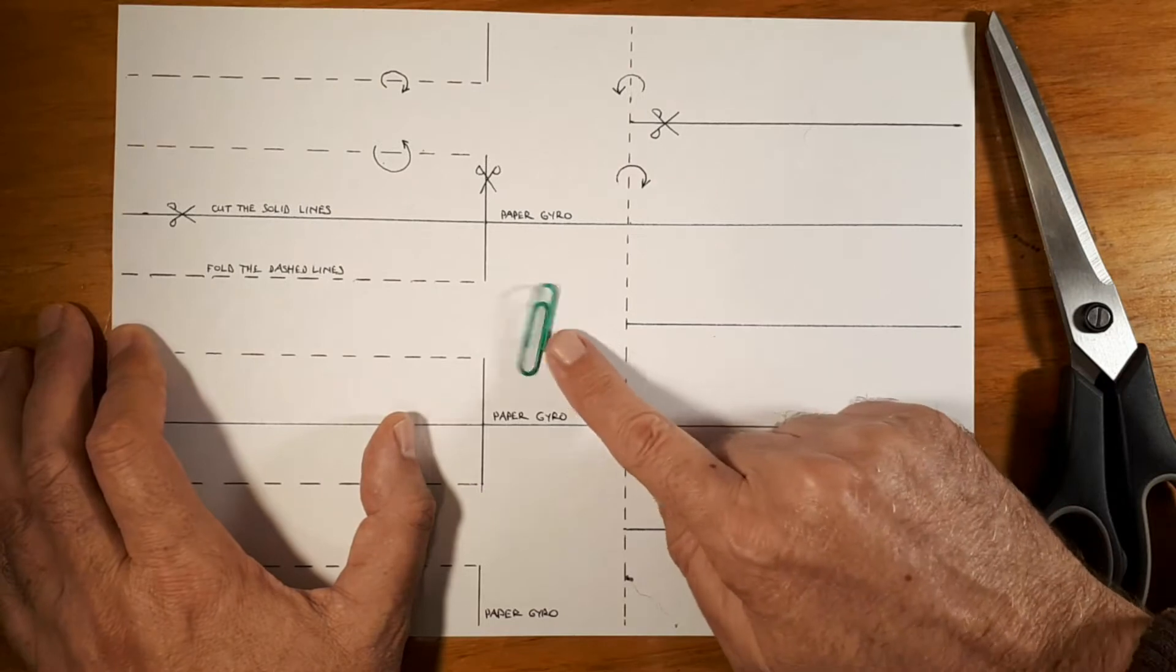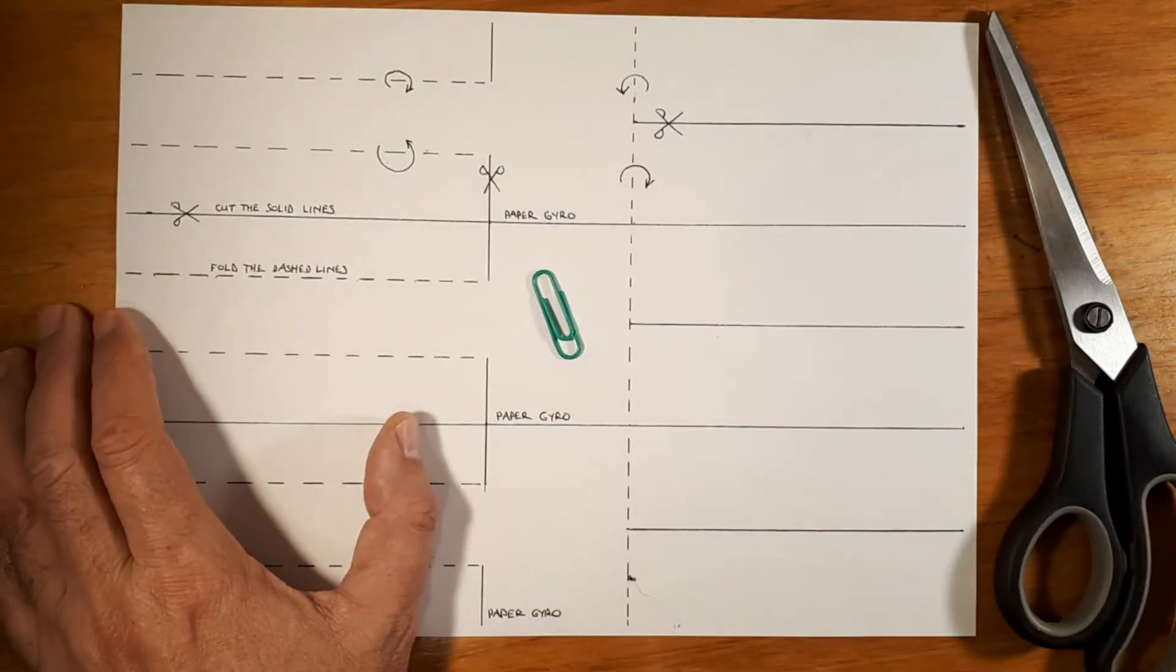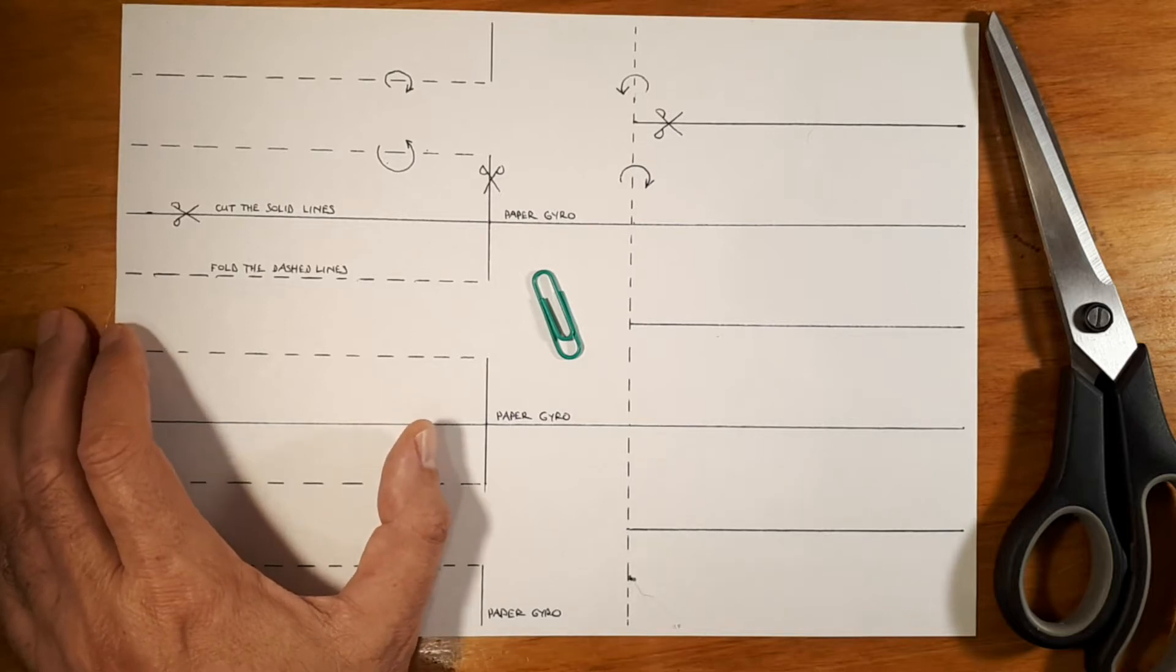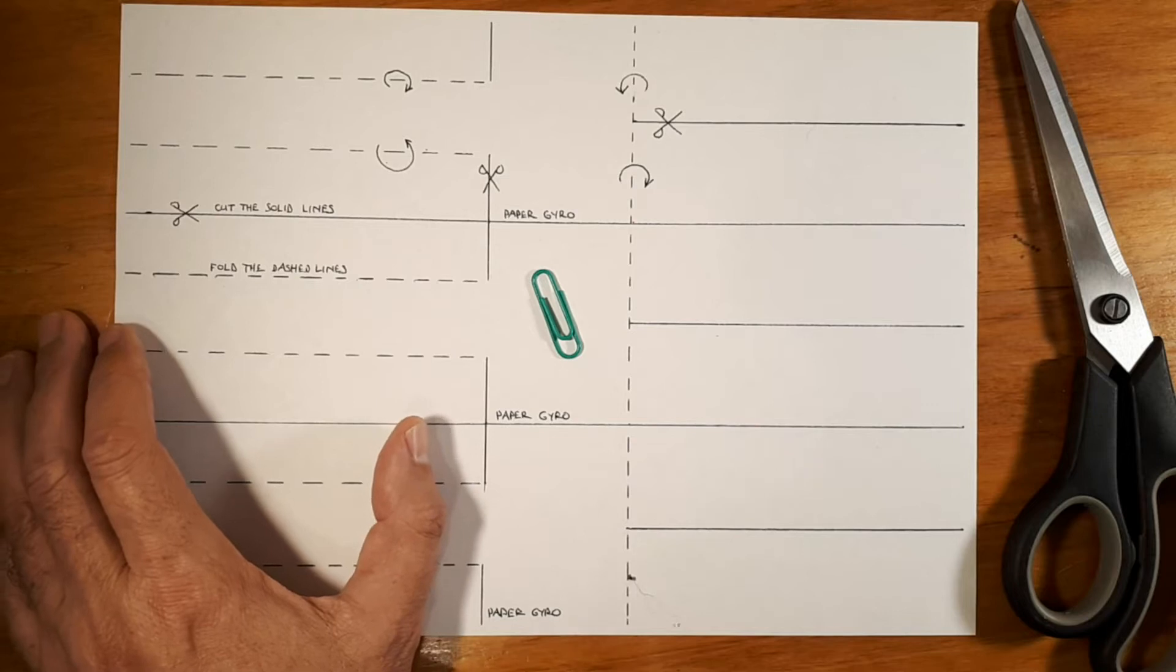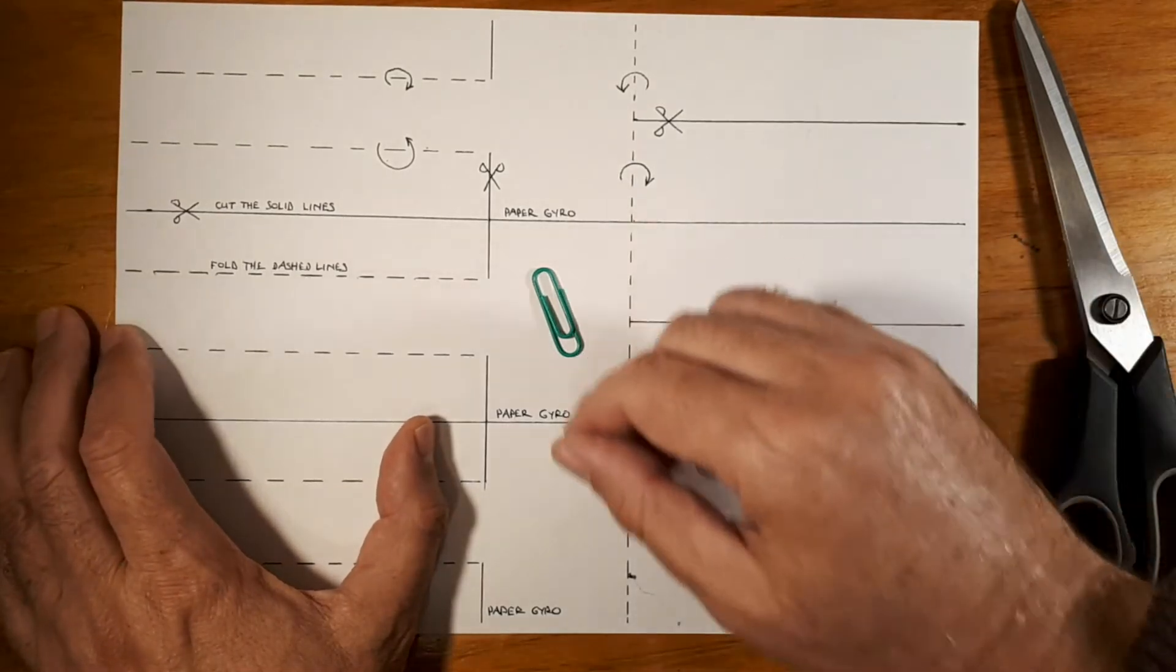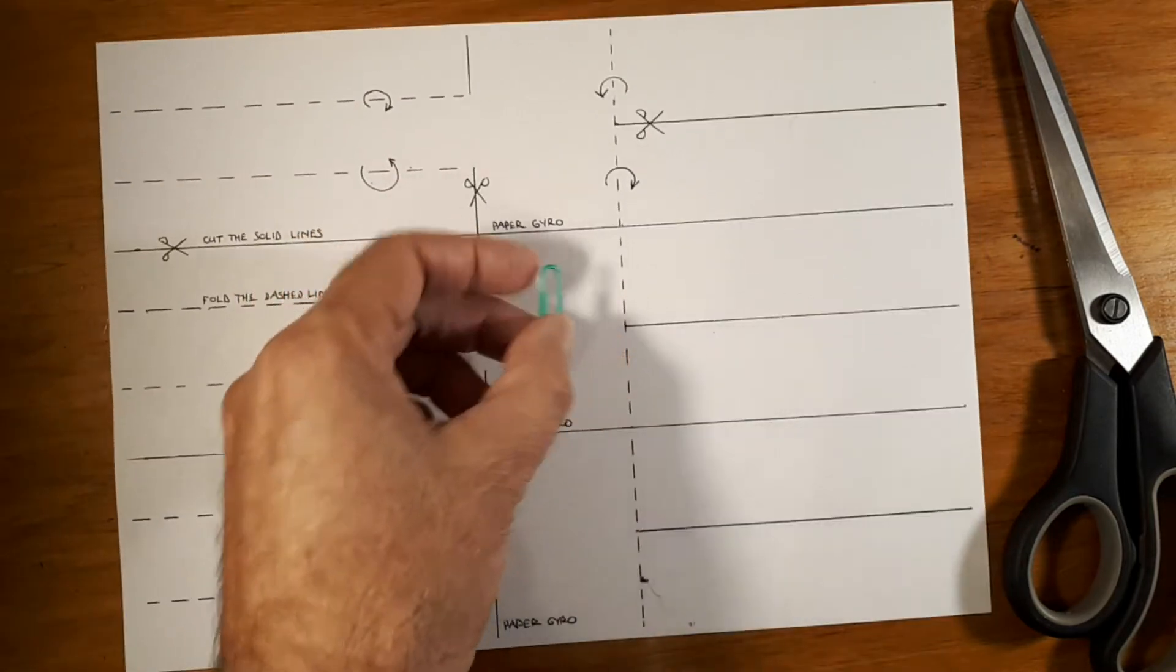Now the other thing you'll need is a paper clip that is going to be our weight, our ballast for it and a pair of scissors and that's all you need to get started. Later on you might decide to decorate it or whatever but the initial making of it is very simple.